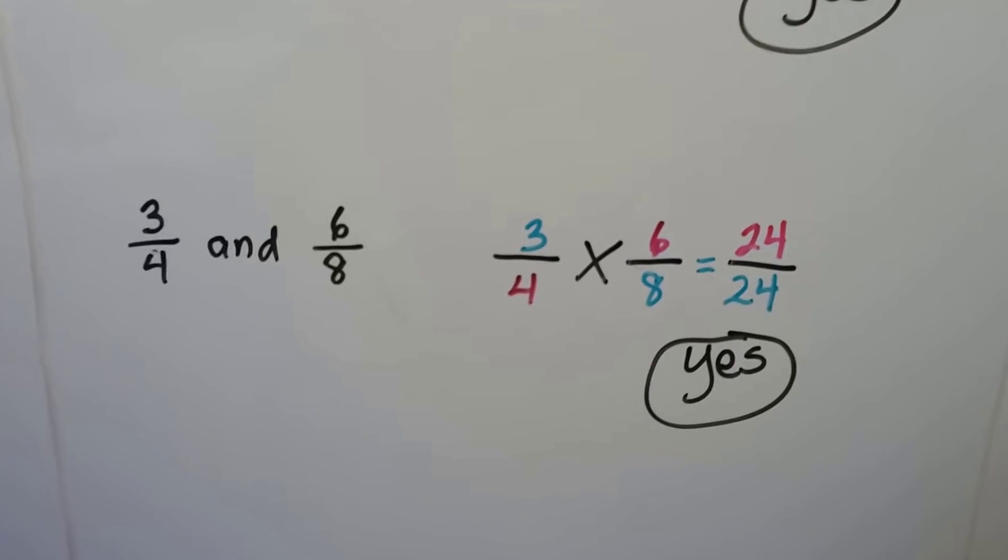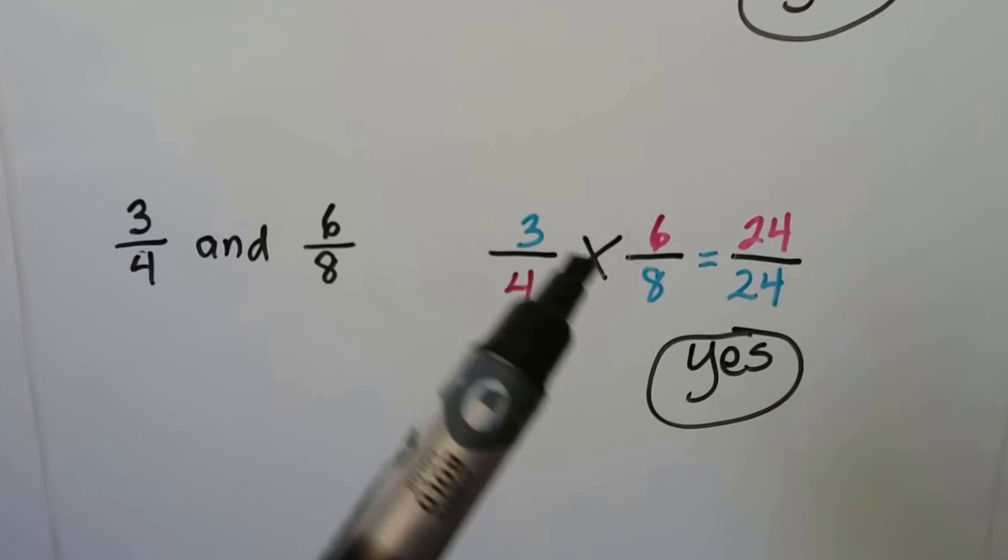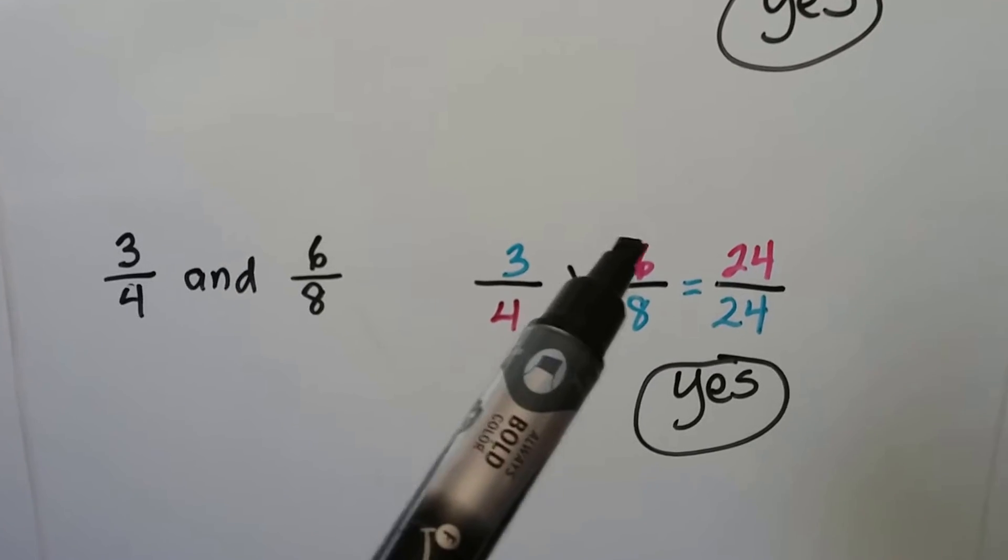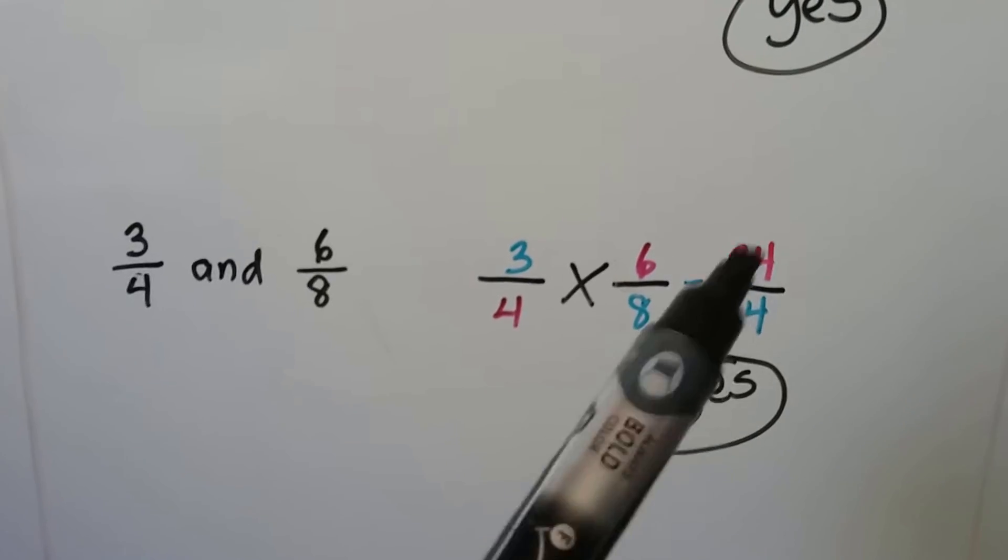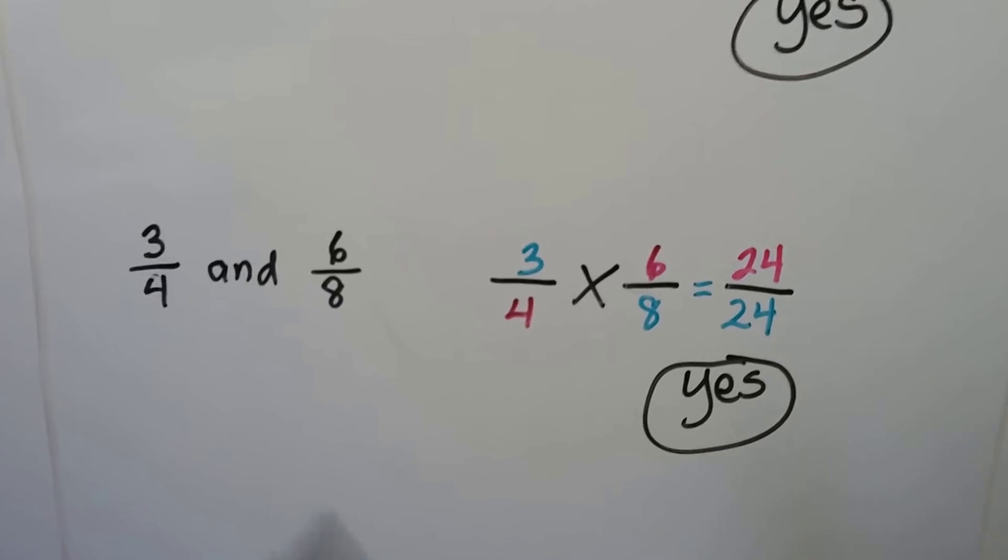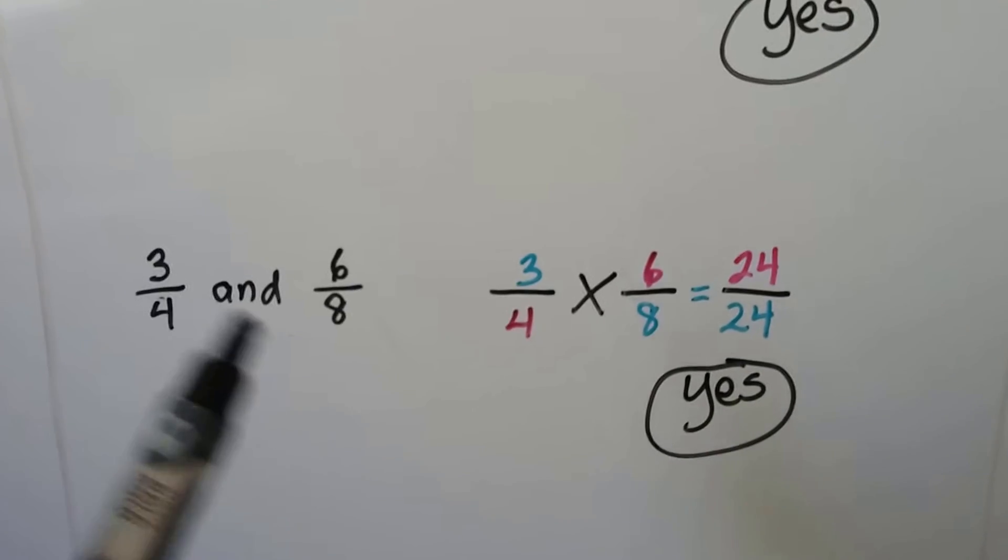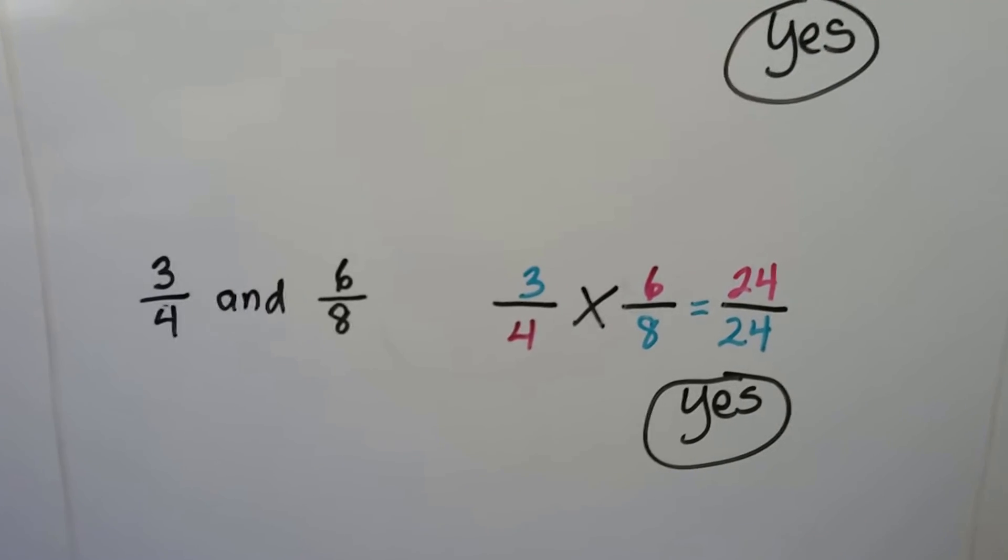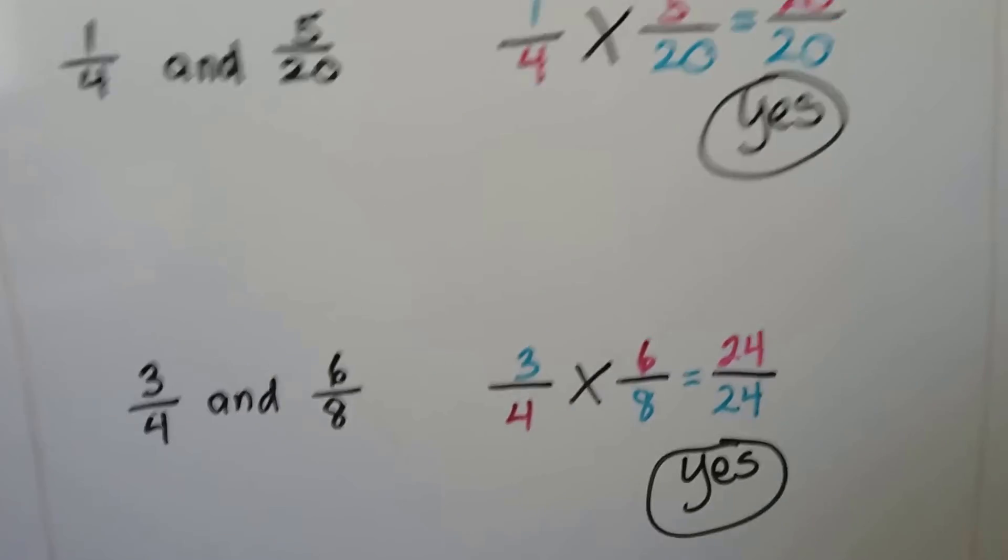We have three-fourths and six-eighths. We multiply the three to the denominator eight and get twenty-four. We multiply the four to the six and get twenty-four. Same product. So yes, these are both equivalent fractions because we got the same product when we were doing cross products.